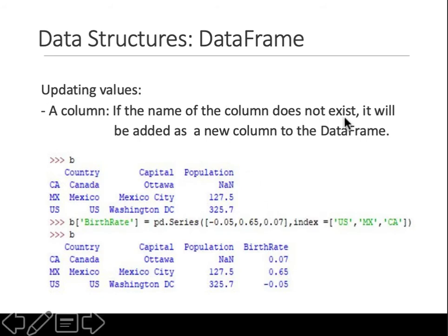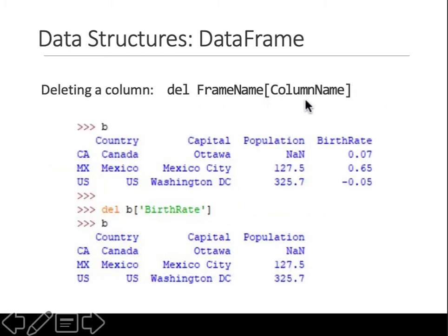If the column does not exist, it will be added as a new column to the DataFrame. For example, assign a new column name with values for certain indices — say 'us', 'mx', 'ca'. If the last value 'ca' was not provided, NaN appears there. To delete a column, use: del dataframe['column_name']. For instance, del frame['birth_rate'] removes the entire birth_rate column.